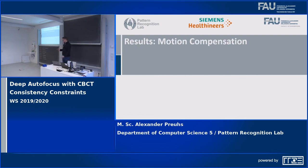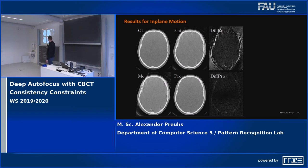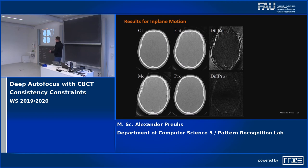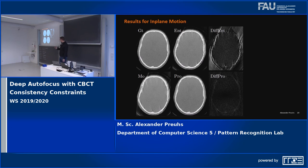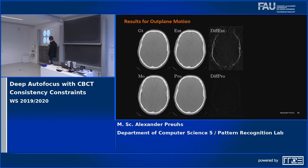Our results show the ground truth at the top, the motion-corrupted image, and the output of our proposed method, which successfully removes the artifacts. Comparing against entropy — one of the successful handcrafted features from the literature — entropy gets stuck in a local minimum. Entropy tells us how a nice image looks but does not tell us how two bad images relate to each other. This problem occurs for both in-plane and out-of-plane motion with large motion amplitudes.